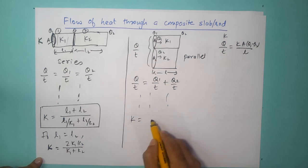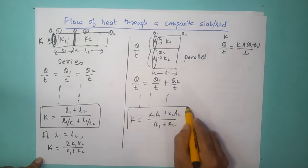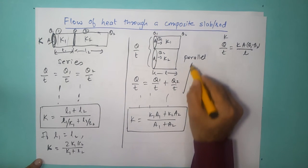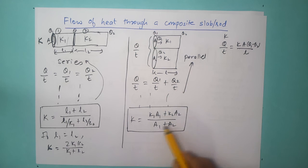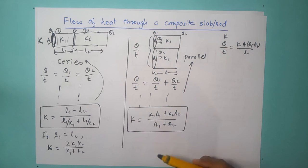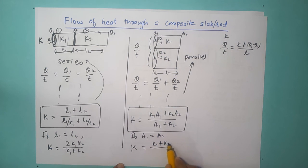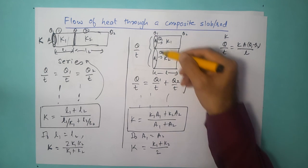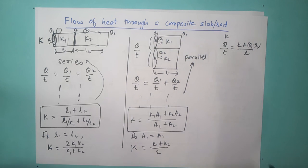For the parallel connection, K = (K1*A1 + K2*A2) / (A1 + A2). The series equation involved lengths, but here since lengths are the same they cancel out, and the result depends on the individual thermal conductivities and cross-sectional areas. If A1 equals A2, this simplifies to K = (K1 + K2) / 2, which is simply the average of the two thermal conductivities.